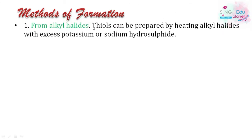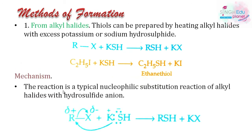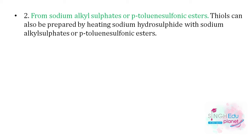Now, methods of preparation of thiols. First method: from alkyl halides — thiols can be prepared by heating alkyl halides with excess potassium or sodium hydrosulfide. Adding sodium or potassium hydrosulfide to an alkyl halide gives thiol and potassium halide as products. For example, ethyl iodide reacted with potassium hydrosulfide gives ethyl thiol. The mechanism involves a nucleophilic substitution reaction of the alkyl halide with hydrosulfide ions, forming thiol and a metal halide.